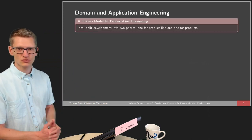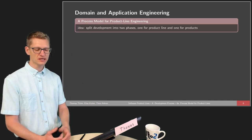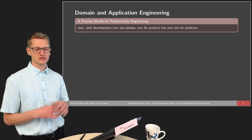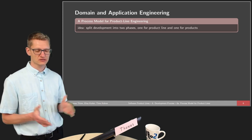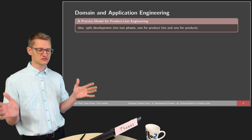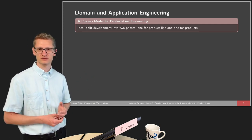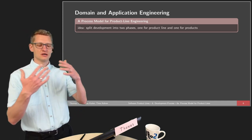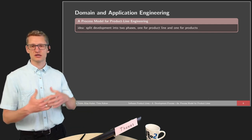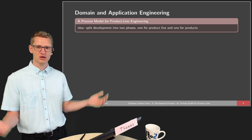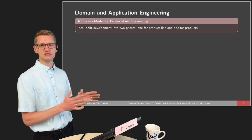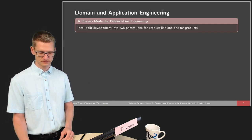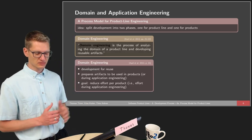How does a process model for product line engineering look like? The main idea is that we split the development into two very general phases: one for the product line and one for the products. We distinguish activities intended to be reused across the overall product line from those activities devoted to producing a particular product for a certain customer. These two phases are known as domain engineering and application engineering.